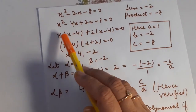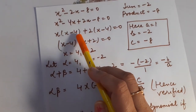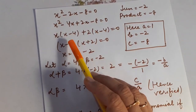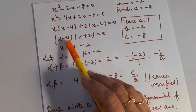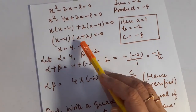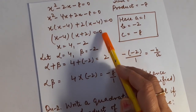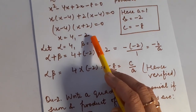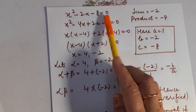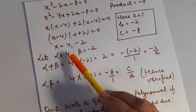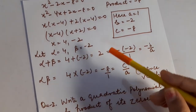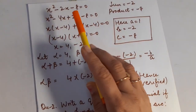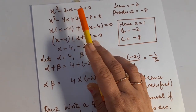Taking x common from the first two terms: x(x − 4) + 2(x − 4). So the factors are (x − 4)(x + 2). Equating both factors equal to 0, I get x = 4 and x = −2. These are the zeros of this quadratic polynomial. Let alpha = 4 and beta = −2, and now I will verify the relation between these zeros and the coefficients.